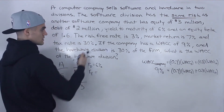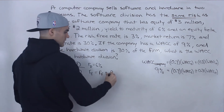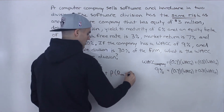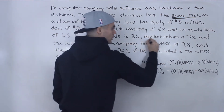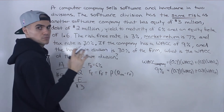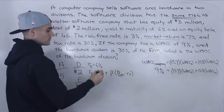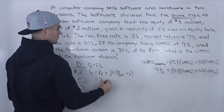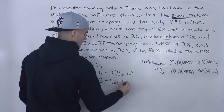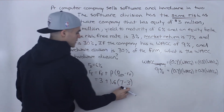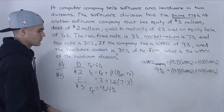We're also given the risk-free rate and the market return, so we can use the CAPM: return on equity = risk-free rate + beta × (market return − risk-free rate). Note that 7% is the market return, not the market risk premium — be careful with that distinction. So: Re = 3% + 1.6 × (7% − 3%) = 3% + 1.6 × 4% = 9.4%.